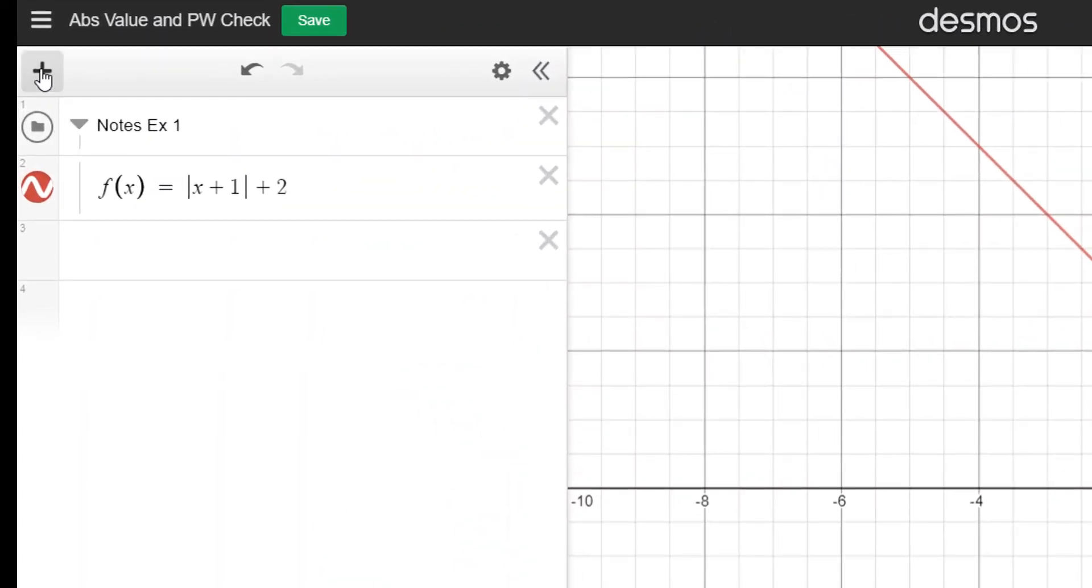Now you're going to make a folder. And remember, if you forget how to add a folder, you're going to do the plus sign and go down to folder. And you're going to call that folder notes ex1. And then you're going to hit enter and you're going to type in our first example here: f(x) equals the absolute value of x plus 1 and then plus 2. Now from here, underneath this, once you have that in, what I want you to do is go ahead and hit enter.